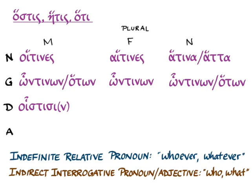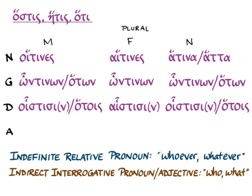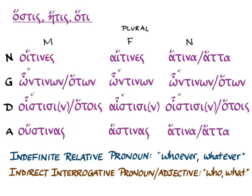Dative: οἷστισι, which can have a nu movable, or ὅτοις in the dative plural for the masculine; αἷστισι with a nu movable for feminine; and then οἷστισι or ὅτοις in the neuter plural. For accusative plural: οὕστινας, ἅστινας, ἅτινα, or ἅττα again.